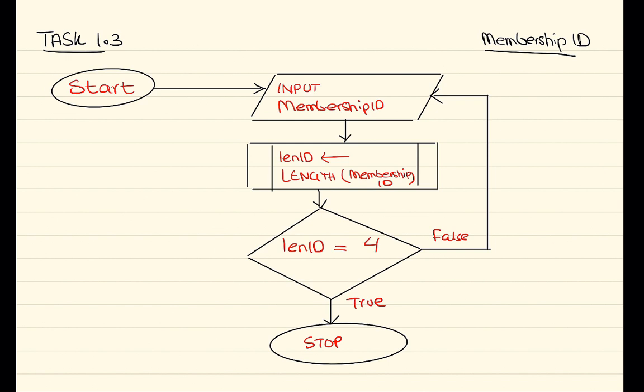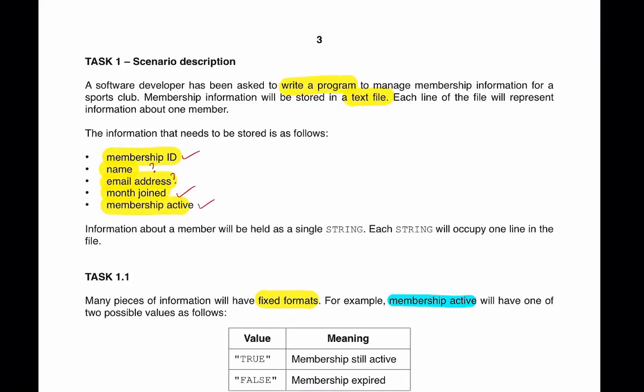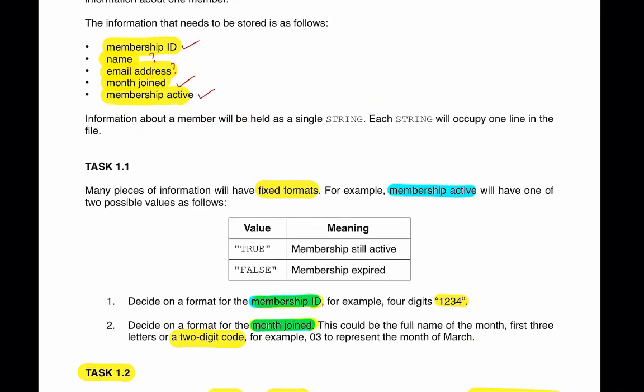So this is for membership ID. We'll move on to the next part, which is for month joined. For month joined, there is only one format check: is it 2 digits or not?